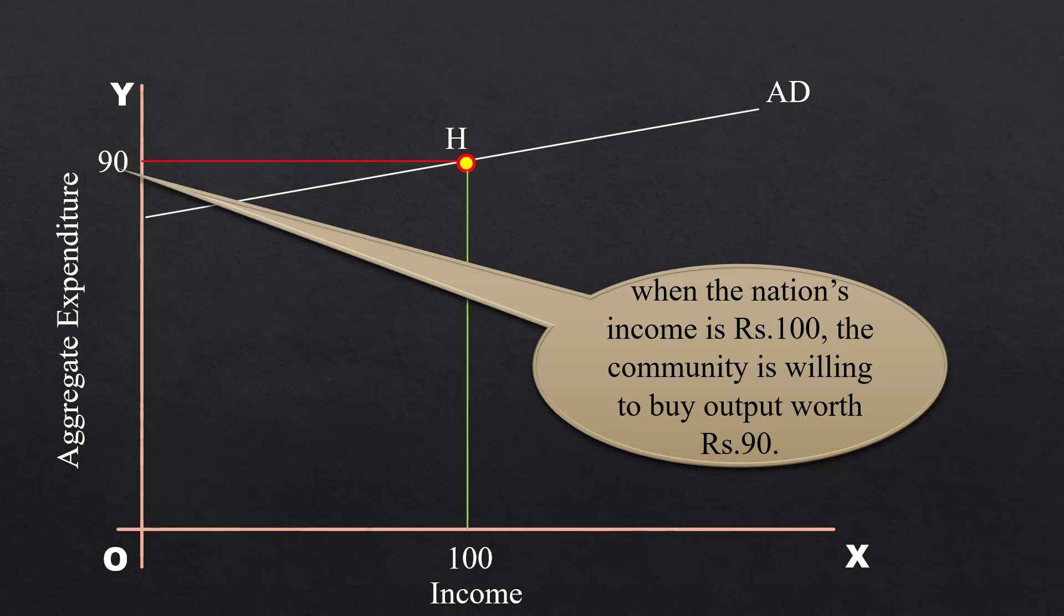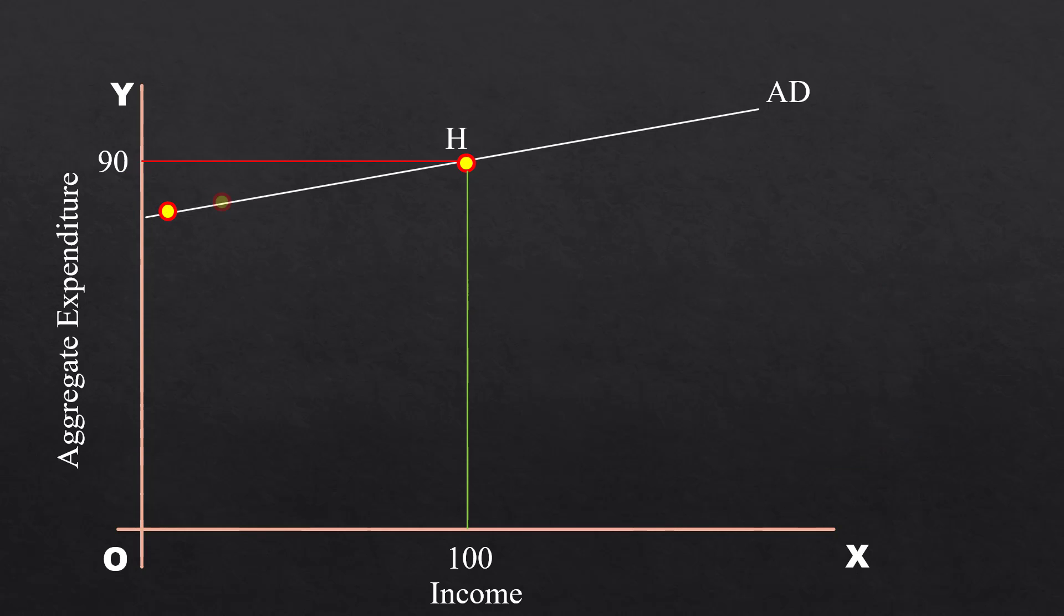From this it follows, that each point on the aggregate demand represents a certain level of money value of output, the community as a whole plan to buy at different income levels.